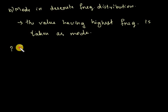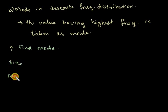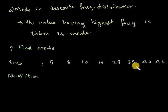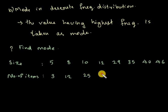Find the mode. The data given includes size values: 5, 8, 10, 12, 29, 35, 40, and 46. The corresponding frequencies are: 3, 12, 25, 40, 31, 20, 18, and 7.